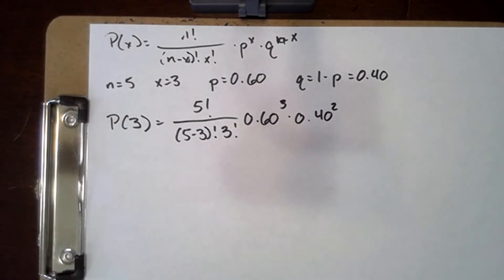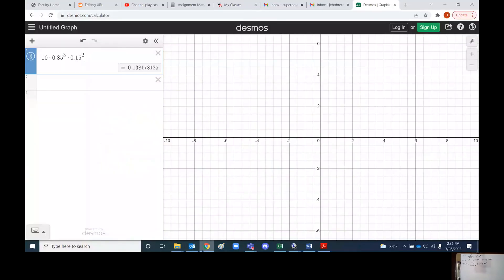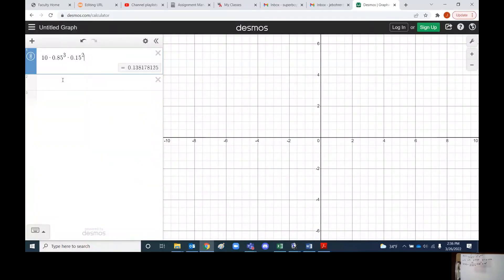And so again, we had exactly the same choose function there, so we'll just change our probabilities here and we're all set. And there we go. That probability is 0.3456 that exactly three people will believe in the devil.